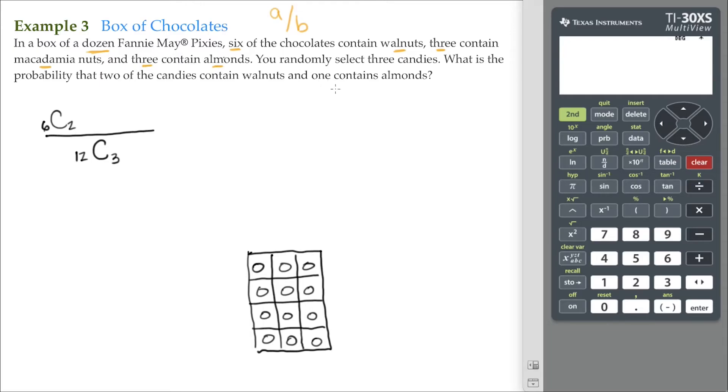Three of the candies contain almonds. We want one of them. So that's going to be 3 choose 1. We know that the event A is a subset of B, so our subscripts here must tally up to the subscripts in our denominator.